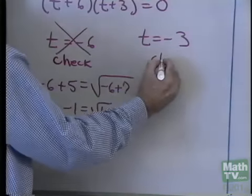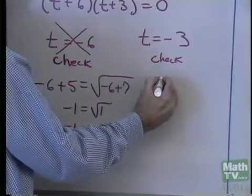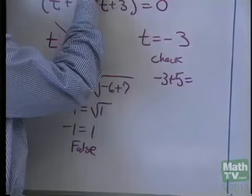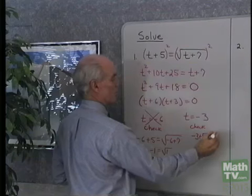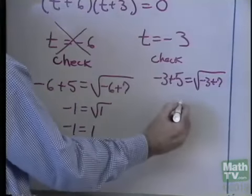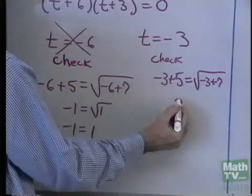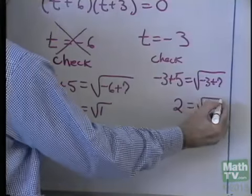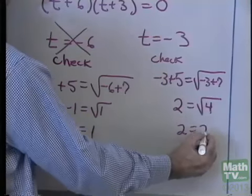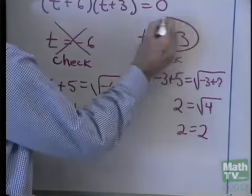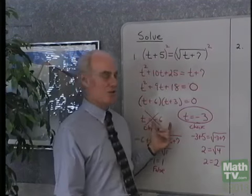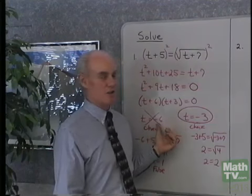Let's check t equals negative 3. In my original equation: negative 3 plus 5 equals square root of negative 3 plus 7. This one is going to work. Negative 3 plus 5 is 2. Square root of negative 3 plus 7 is the square root of 4. The positive square root of 4 is 2. I get 2 equals 2. So this is a solution to my original equation.